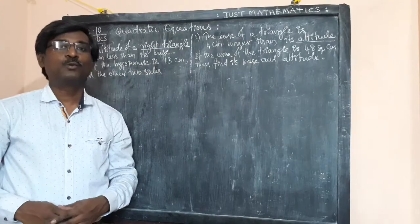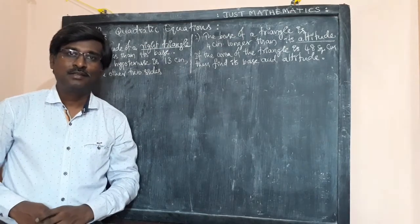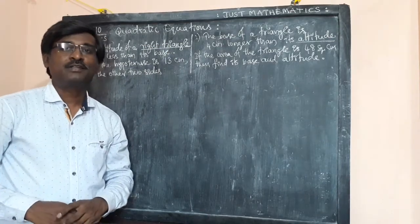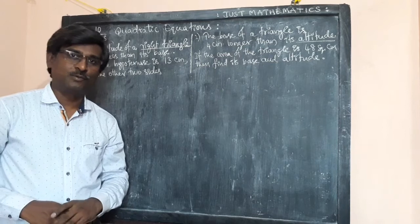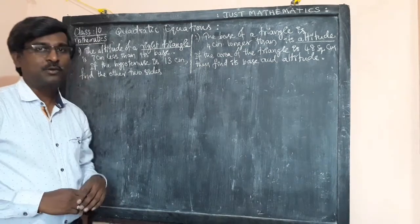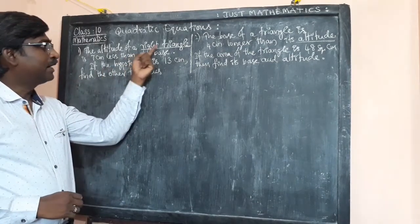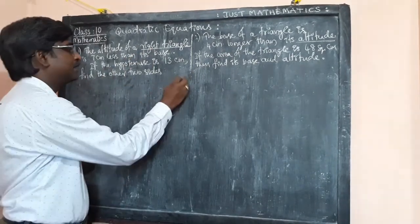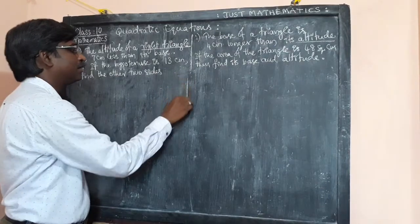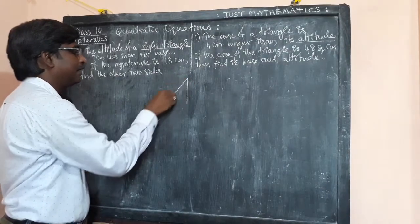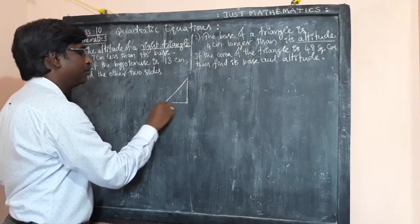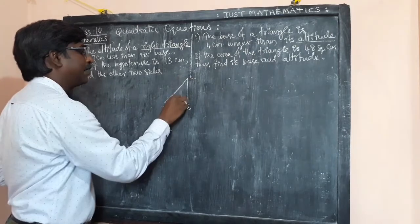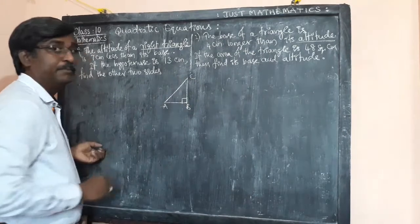Hello, here we have two questions under the application of quadratic equations and finding roots. The first question is related to a right angle triangle. Let us draw one right angle triangle — let it be ABC with the right angle at B.